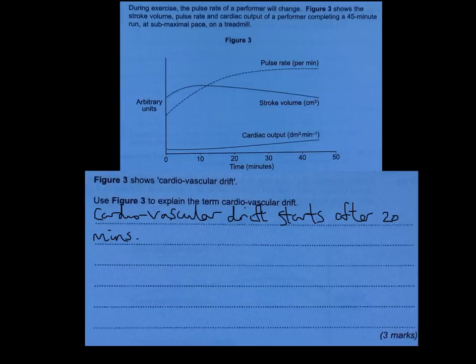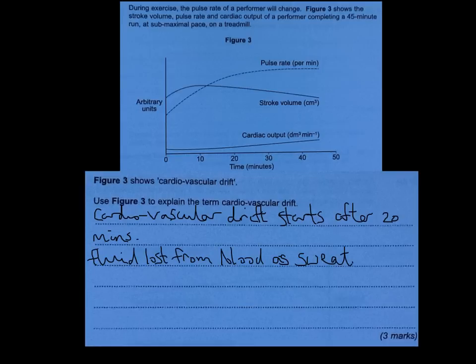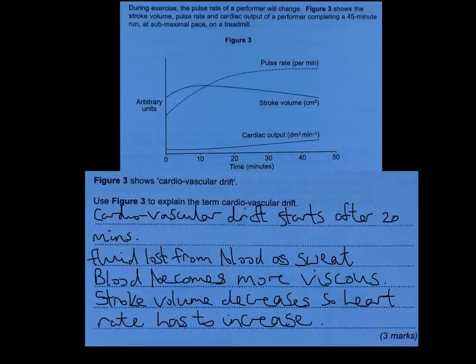Here's how to answer a cardiovascular drift question for three to four marks. Mark one: cardiovascular drift starts after 20 minutes of exercise. Mark two: fluid is lost from the blood as sweat. Mark three: as a result the blood becomes more viscous — thicker. Mark four: stroke volume decreases because the heart finds it more difficult to pump the thicker blood, so heart rate has to increase to compensate.